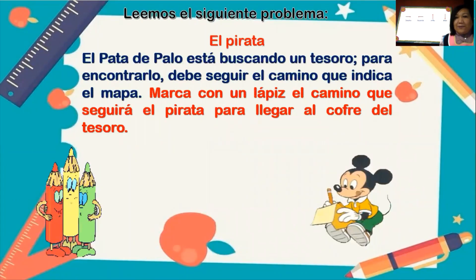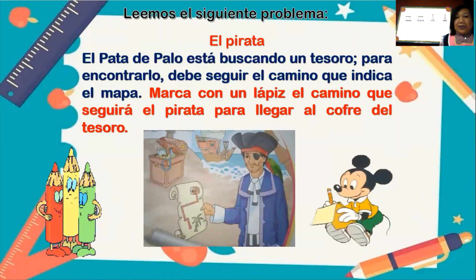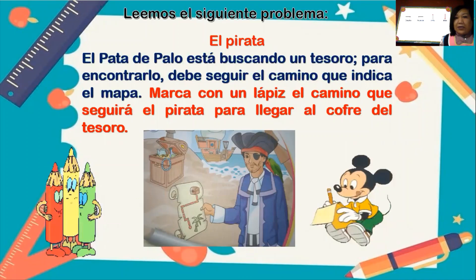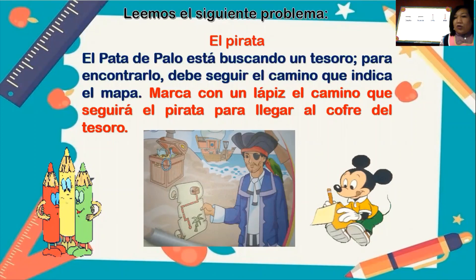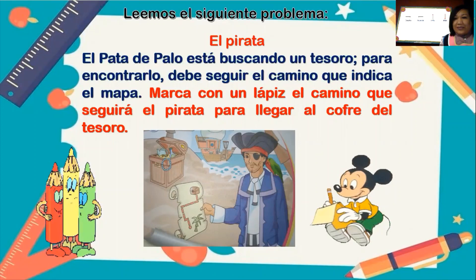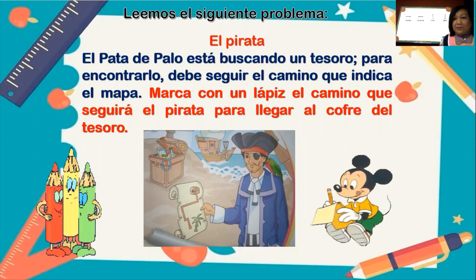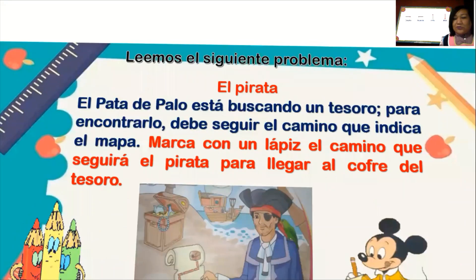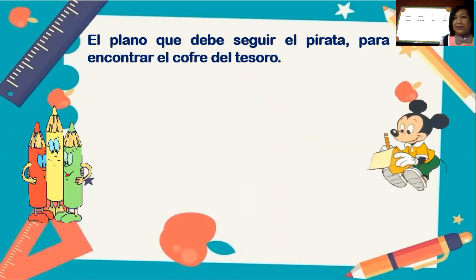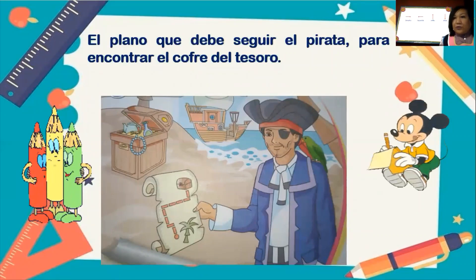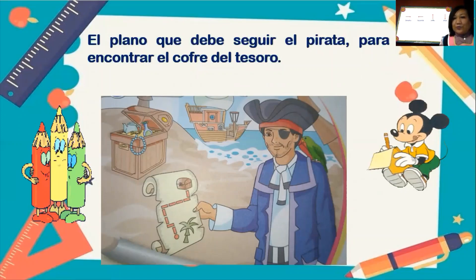Vamos a empezar leyendo este problema. Nos habla sobre el pirata. El pata de palo está buscando un tesoro. Para encontrarlo, debe seguir el camino que indica el mapa. Marca con un lápiz el camino que seguirá el pirata para llegar al cofre del tesoro. Ahí estamos viendo el tesoro y el mapa del tesoro. El desplazamiento que debe seguir el pirata para encontrar el cofre es: una flecha para arriba, otra para la izquierda, dos para arriba, cuatro para la derecha y una para arriba. Y llega al tesoro.